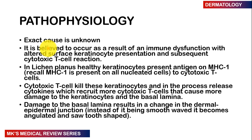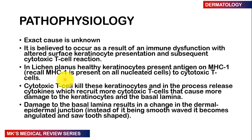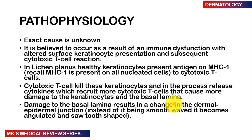The epidermis is made up of keratinocytes — 90% of the epidermis is filled with these cells and about 10% are melanocytes. In lichen planus, the healthy keratinocytes present antigen on MHC1 (major histocompatibility protein 1), which is present in all nucleated cells. This is presented to cytotoxic T cells, which become stimulated and end up killing these keratinocytes. In the process, they release cytokines that recruit more cytotoxic T cells, causing more damage to the keratinocytes and eventually the basal lamina — the basal layer of the epidermis.